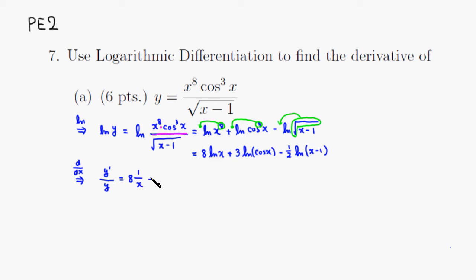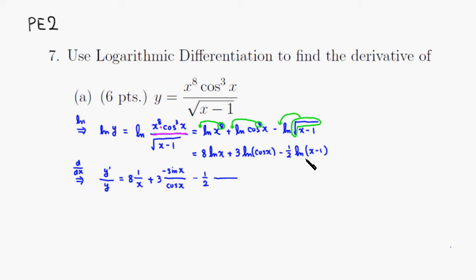Plus 3 times the derivative of the natural log of cosine of x: put cosine of x on the bottom and take the derivative, putting it on top — which is negative sine of x. Then minus one-half, that's a constant multiple. The derivative of the natural log of x minus 1 is: put x minus 1 on the bottom and take the derivative, which is just 1 on top.